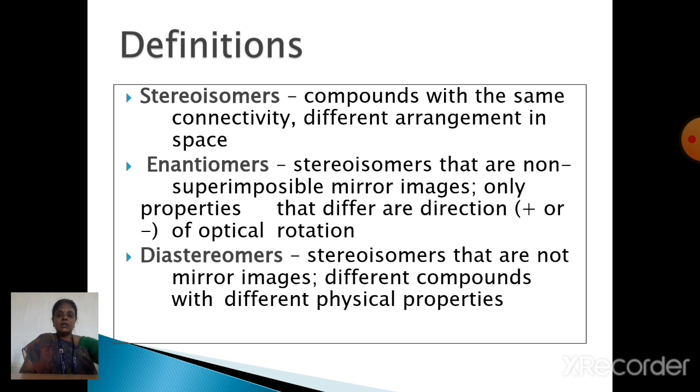Next one is Diastereomers. The Diastereomer compounds are neither mirror images nor superimposable. These compounds are having entirely different chemical, physical and optically active properties.